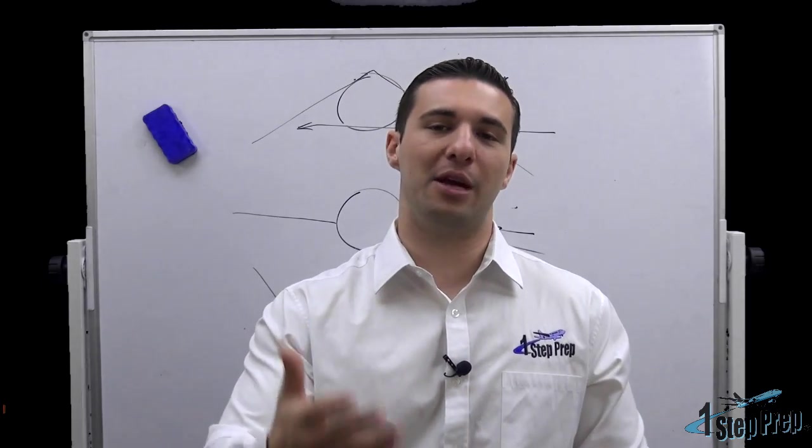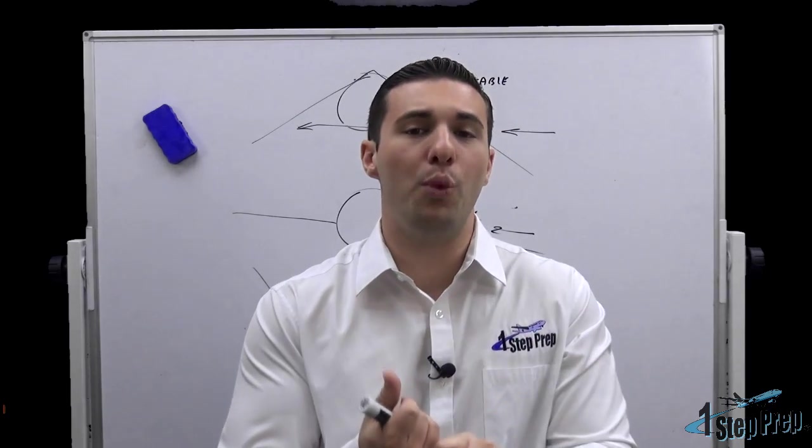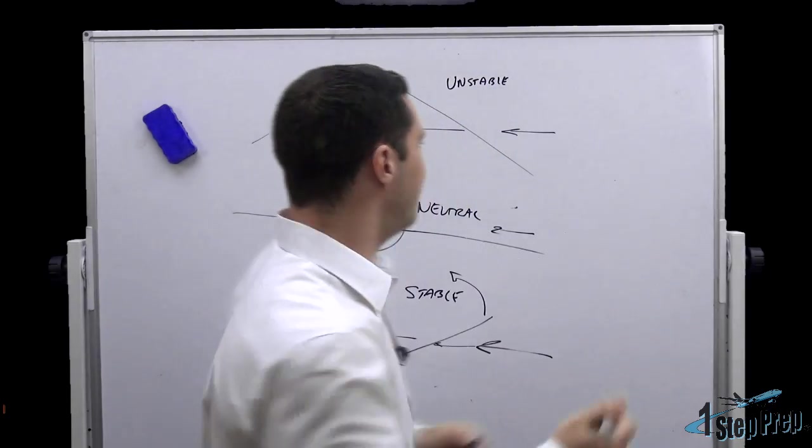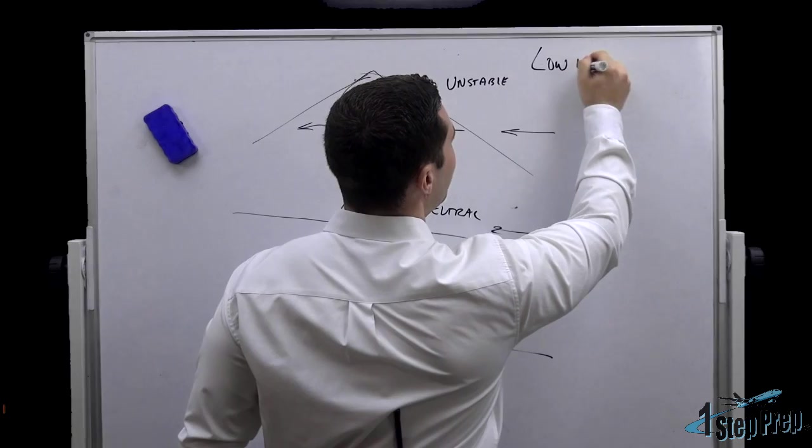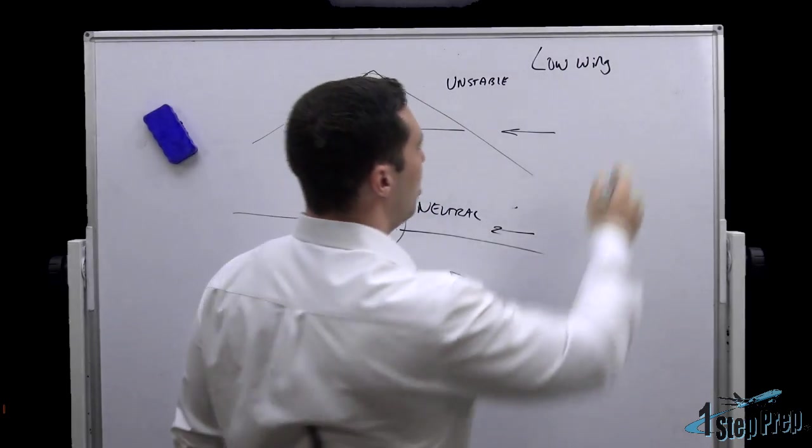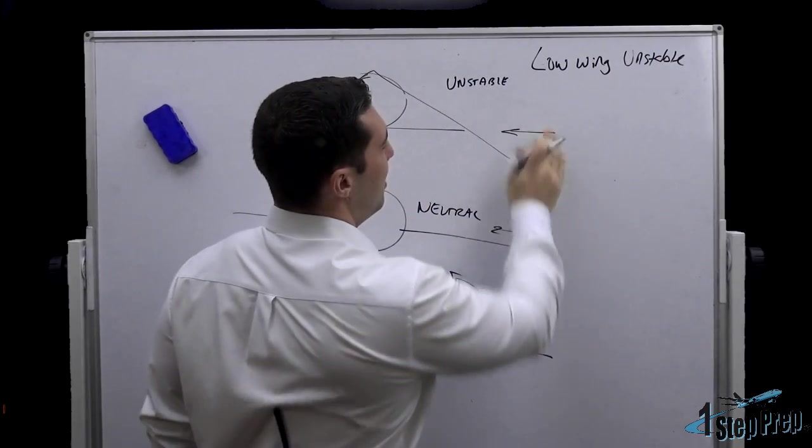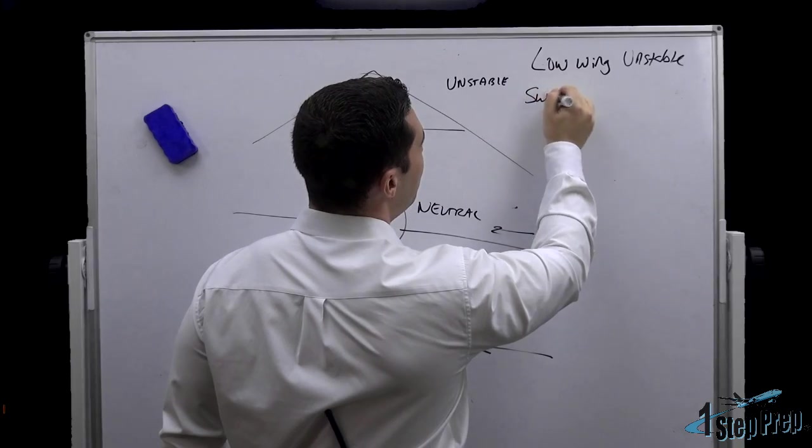So we happen to have, for example, a 320 or a 737. Just as an example, we have a low wing design. Is this stable or unstable? Low wing would be unstable, you agree? In addition to the low wing, we have sweep, aft sweep.